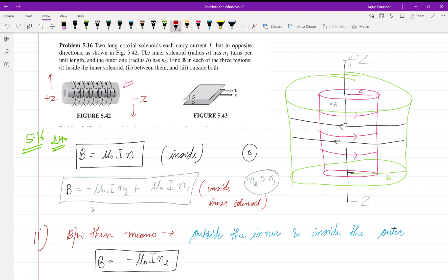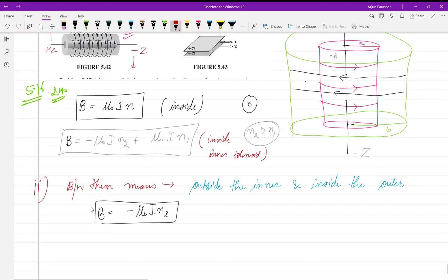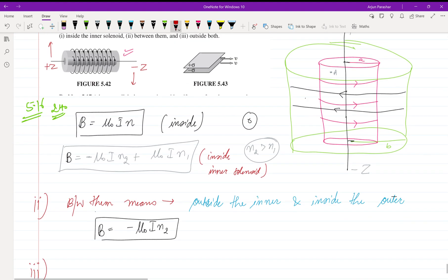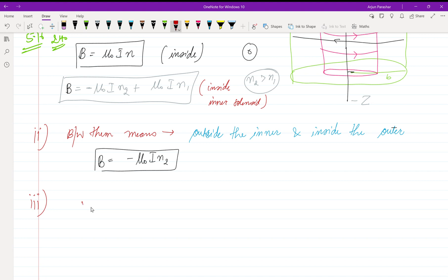In the figure, you must mention top and bottom or right and left instead of just using negative signs. The third part—outside both solenoids—obviously the magnetic field is zero.